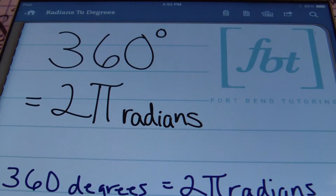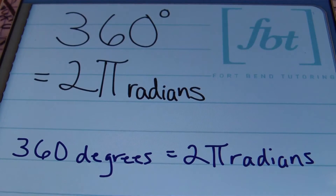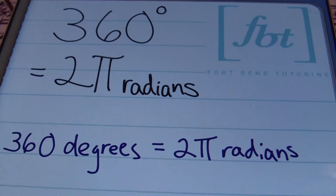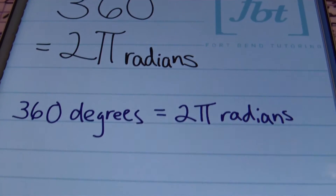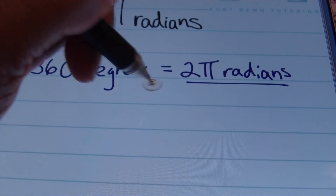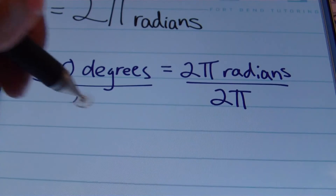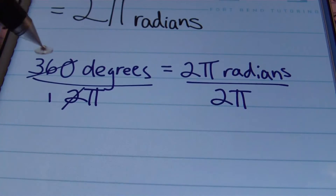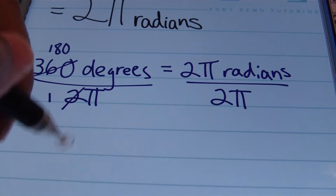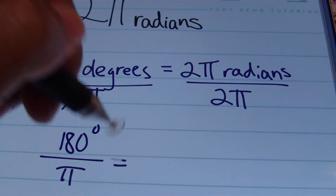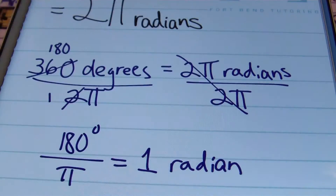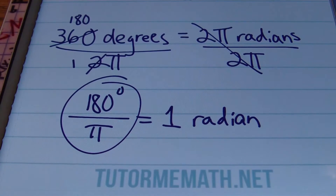It's good to know how to convert radians into degrees. One key fact is that a full circle is 360 degrees, which equals 2π radians. Dividing both sides by 2π, we find that 180 degrees divided by π equals 1 radian. This conversion factor — 180 over π — is what we'll be using throughout this lesson.